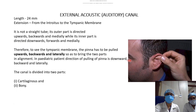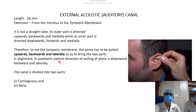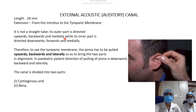The external acoustic or external auditory canal is a 24 mm long canal extending from the concha to the tympanic membrane. It is not straight: the outer cartilaginous part is directed upwards, backwards, and medially, while the inner part is directed downwards, forwards, and medially. To align both parts and see the entire canal through an otoscope, the pinna must be pulled upwards, backwards, and laterally.